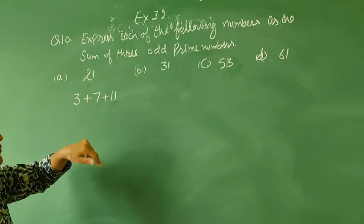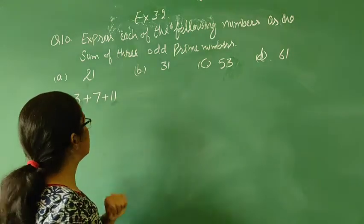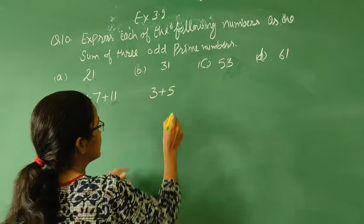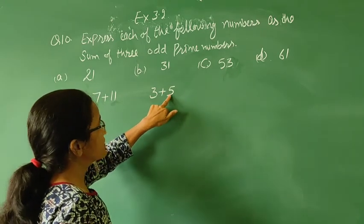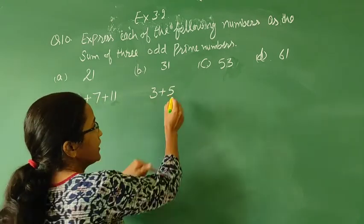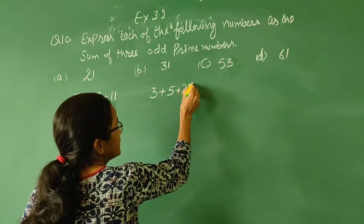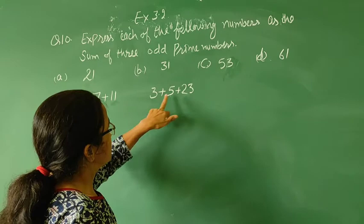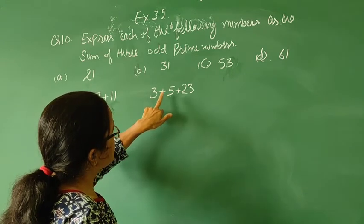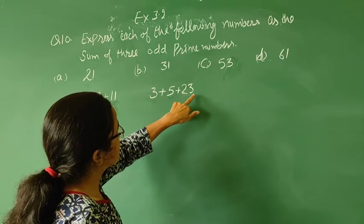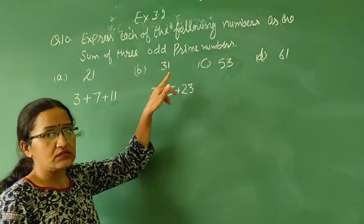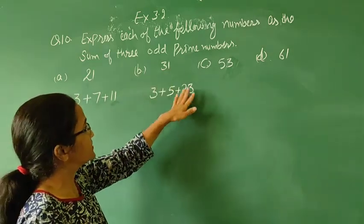Next thing is 31. So here, 3 plus 5, 3 plus 5 is 8. And in 8, if we add 23, then we get 31. So, the sum of 3 plus 5 plus 23 is 31. If we add the 3 numbers, their sum is 31.